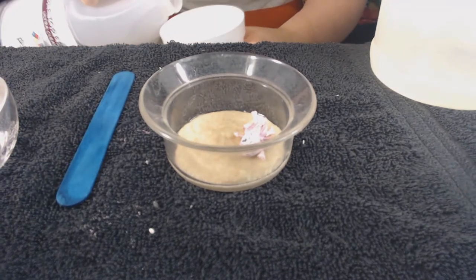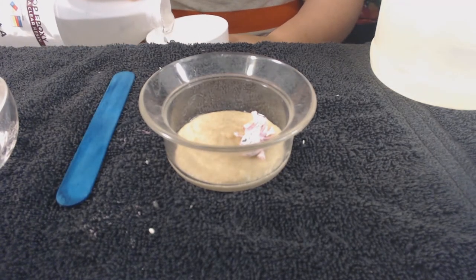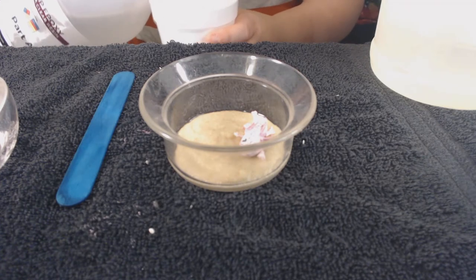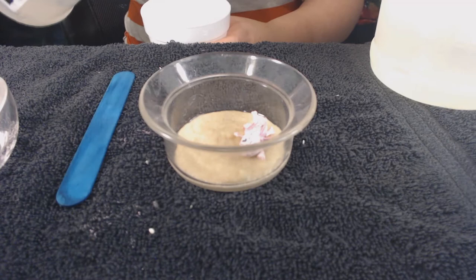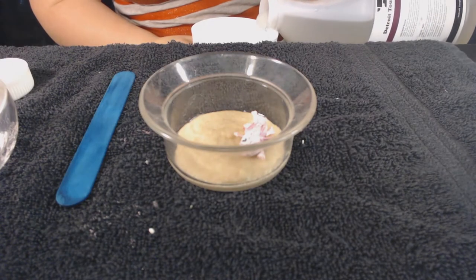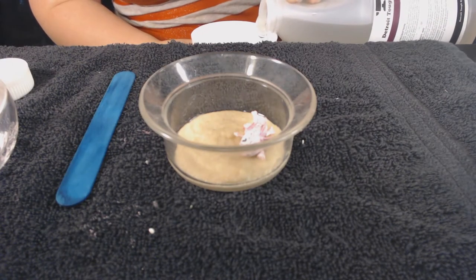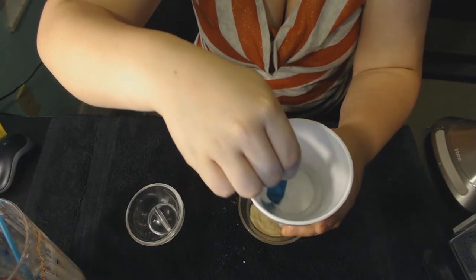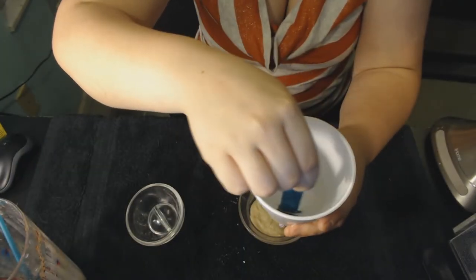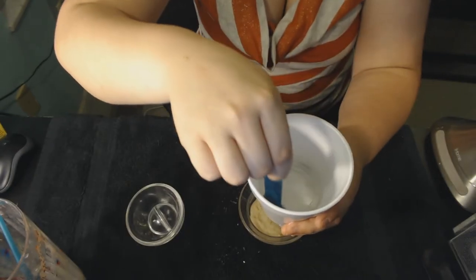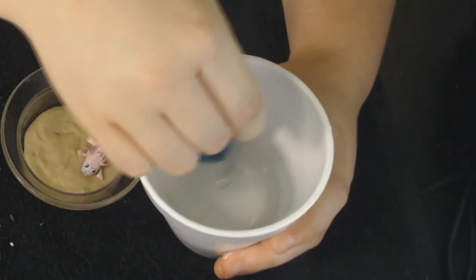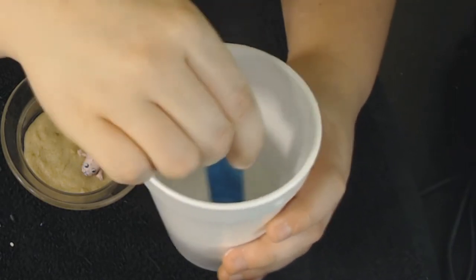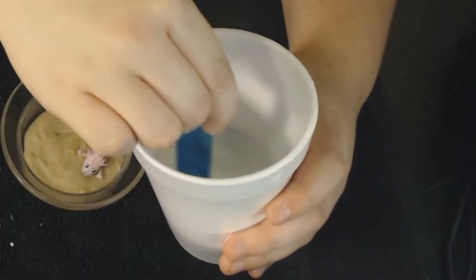Then when you pour the epoxy resin in it will make the sand go everywhere and it'll look horrendous. You don't have to use sand, you can use different things like coarse gravel sand which makes it look like gravel on the bottom. Then you're going to mix the epoxy resin and pour it into the container. When you're mixing the epoxy resin you want to make sure that everything is completely mixed together and you don't want to let there be any air pockets because then that looks not as good.